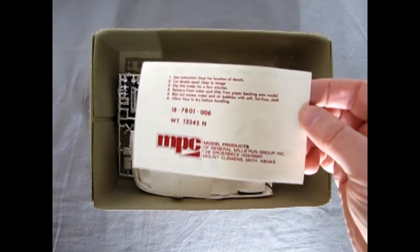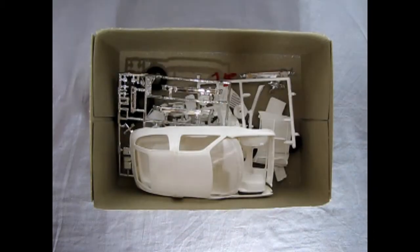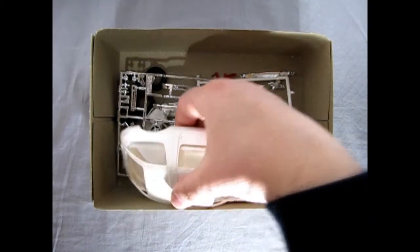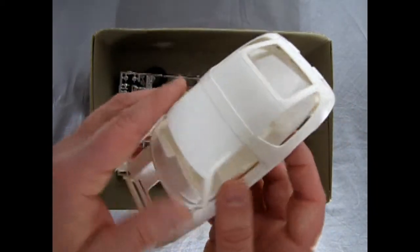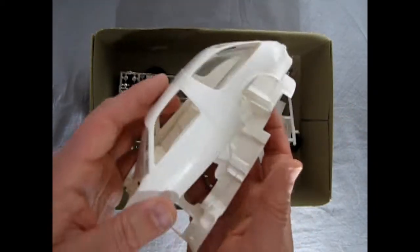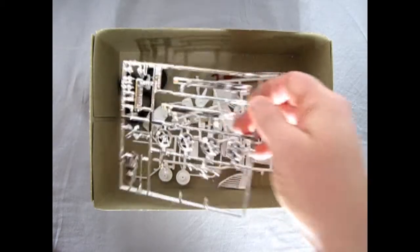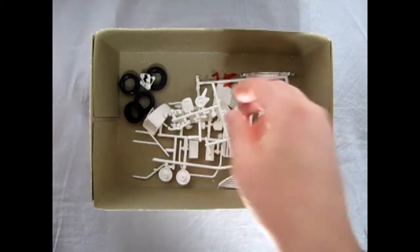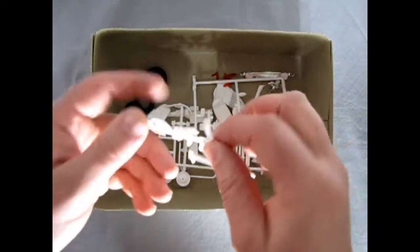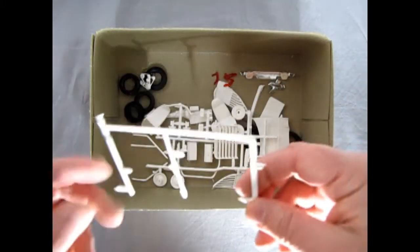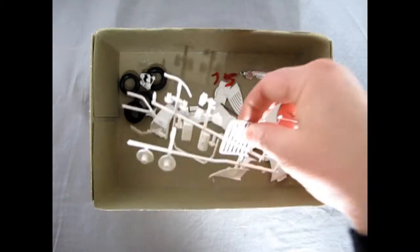There are our original MPC decals which we will take a look at at the end of this video, and then here is our body, interior, glass, and underpan all together. We can take a look at that in a minute. I do have some chrome in here and like I said I was working on this, so here are the plastic components mostly on the trees with a few exceptions here and there.